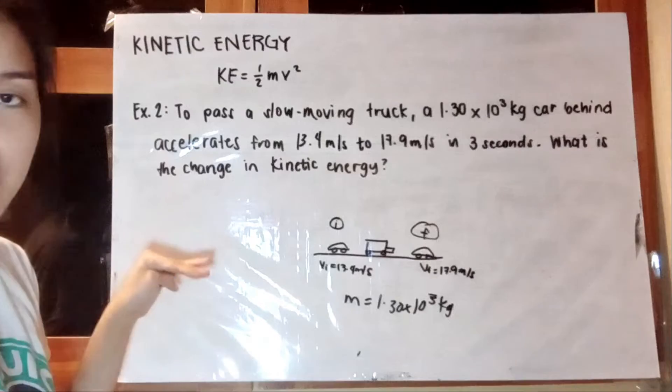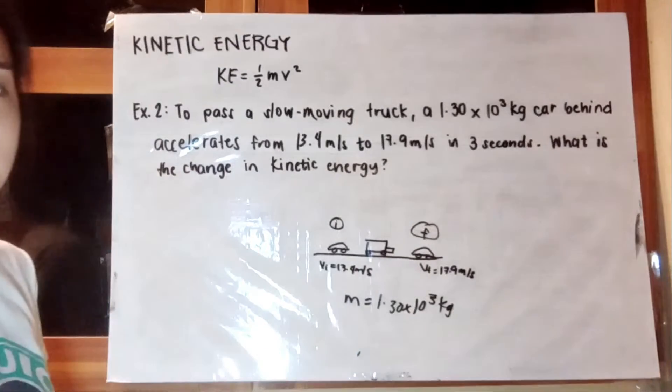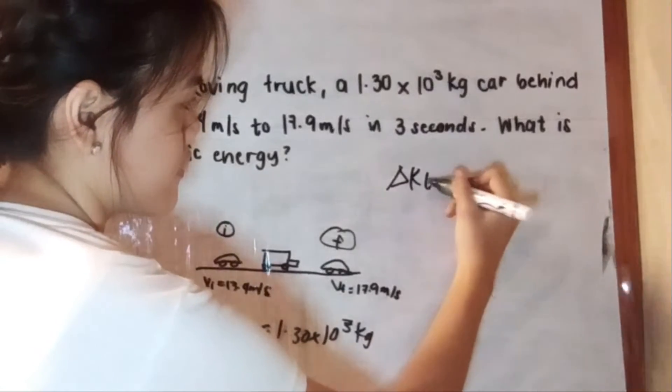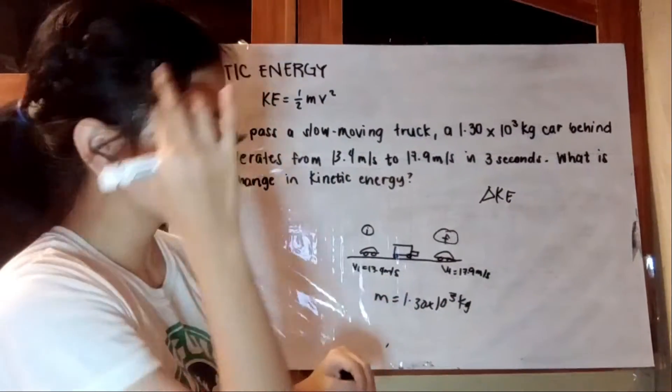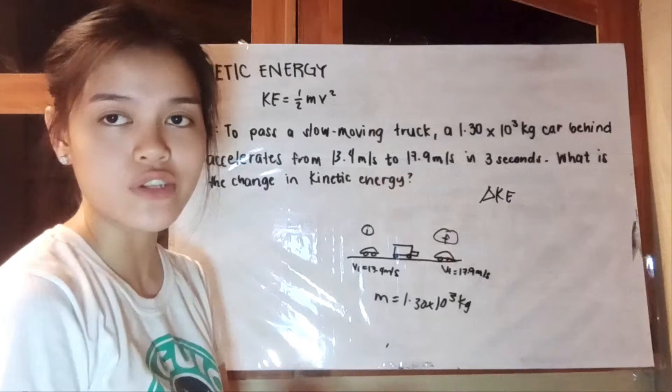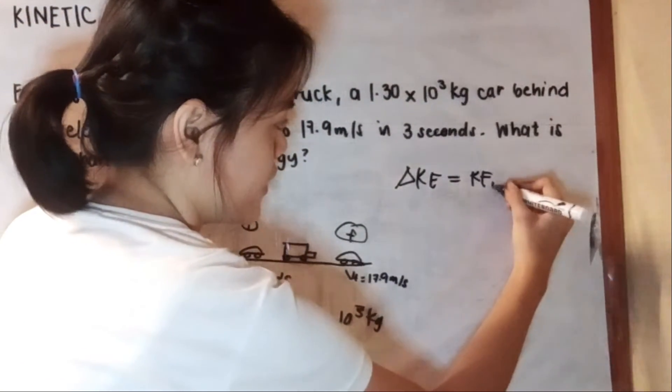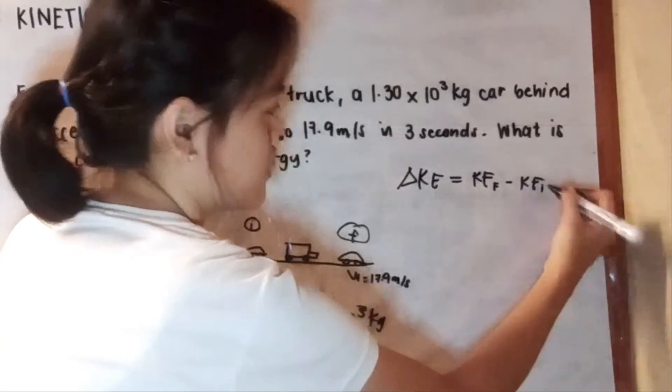So what we're looking for is the change in kinetic energy. That means we are going to subtract the initial kinetic energy from the final kinetic energy. So we have KE final minus KE initial.